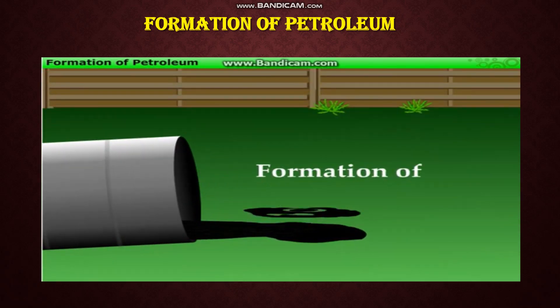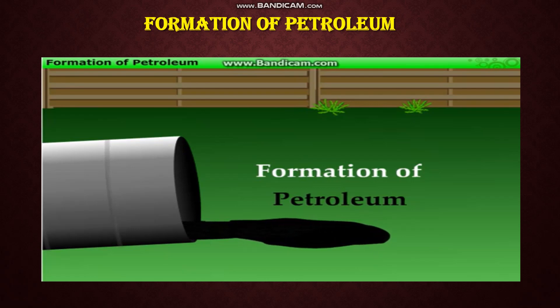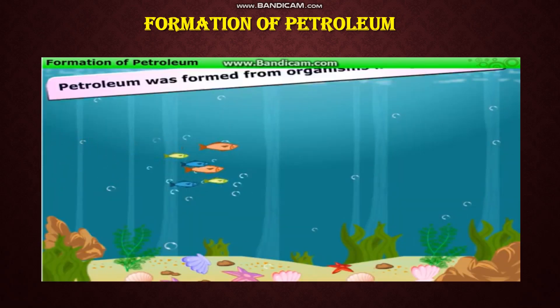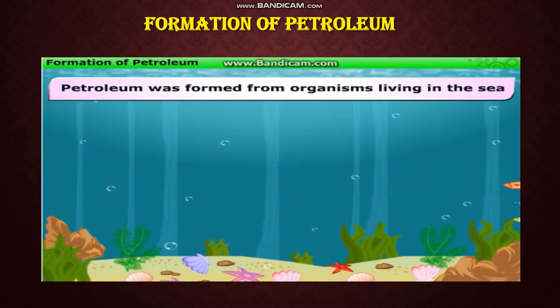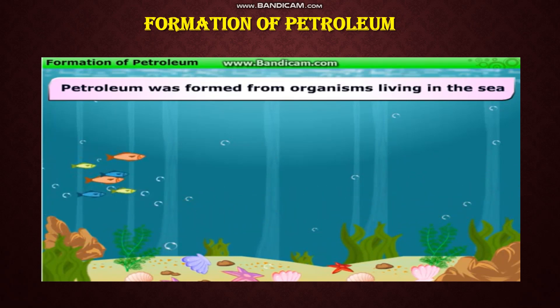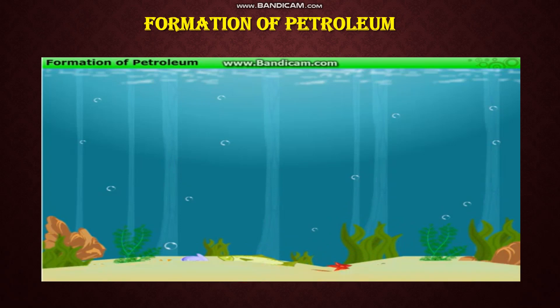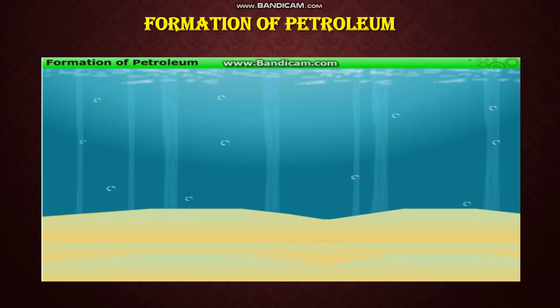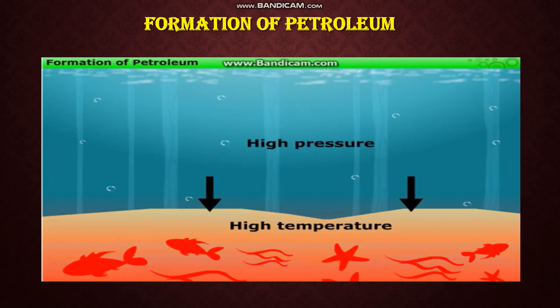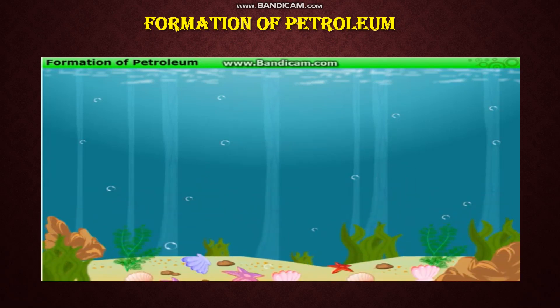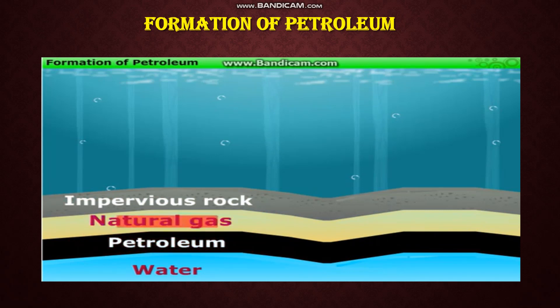Here is a video showing the formation of petroleum. Petroleum was formed from organisms living in the sea by a complex process. As these organisms died, their bodies settled at the bottom of the sea and got covered with layers of sand and clay. Over millions of years, in the absence of air, high temperature and high pressure transformed the dead organisms into petroleum and natural gas.